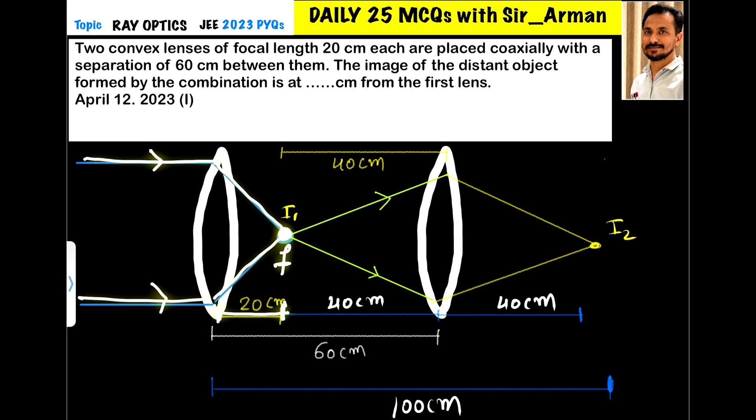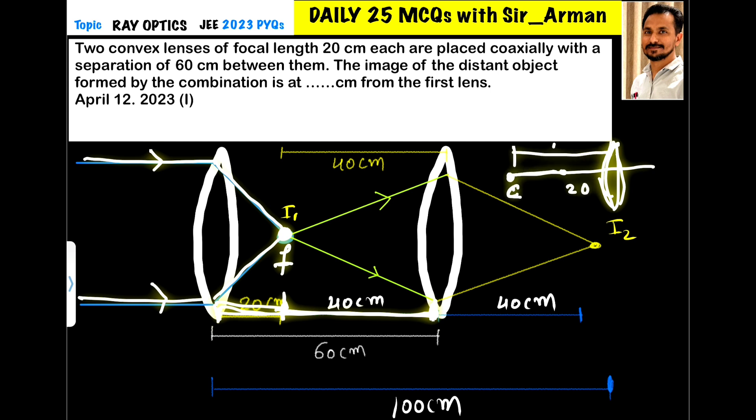Now the distance between these two lenses is 60 centimeter. So if the image is formed at 20, then the remaining distance is 40 centimeter, right? So if you have a lens whose focus is 20 centimeter, then its radius of curvature or the center of curvature lies at a distance 40 centimeter.